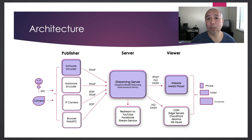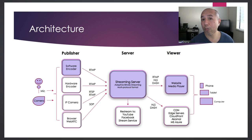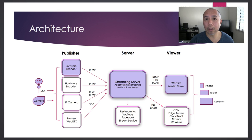With adaptive bitrate streaming, your video player is capable of switching between renditions based on the viewer's connection. If the connection slows down, the player switches to a lower resolution; if it improves, it switches to a higher one. So instead of delivering a single stream at 1080p, you provide multiple resolutions and bitrates, and the player is smart enough to switch based on the viewer's bandwidth.